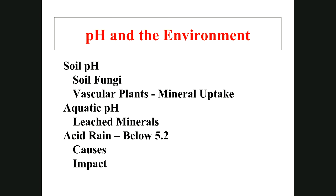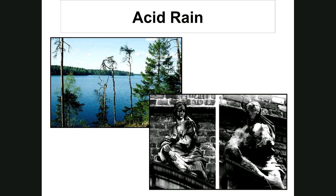A great example of acid rain's effects: much of the statuary in Rome has been moved into museums because if left outside in the rain, it would dissolve. Images of a statue show clear facial features, pleats in cloth, and fingers — then years later those details are gone, dissolved away. The lake pictured shows scraggly trees near the acidic water that don't grow as well, while trees further away look healthy. This is why we have to repaint structures, replace concrete, and protect mineral artifacts.